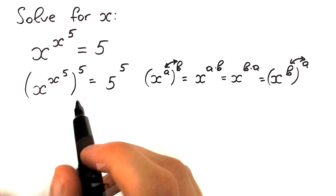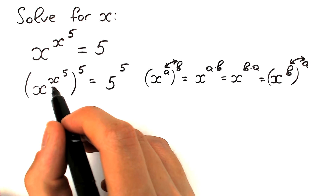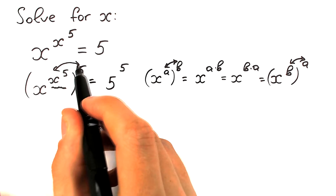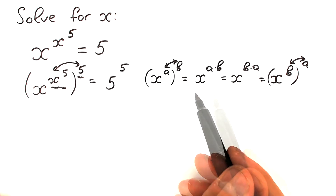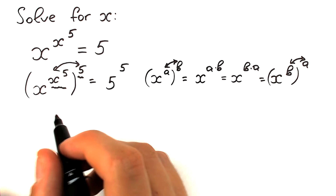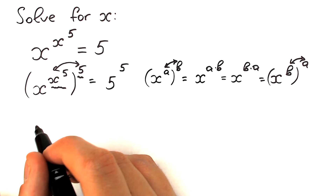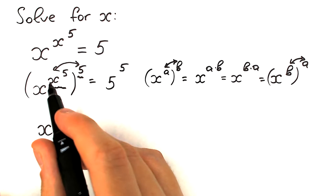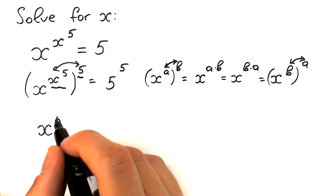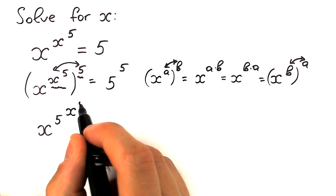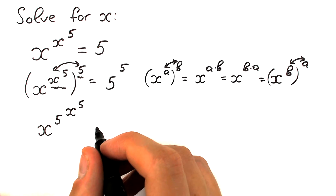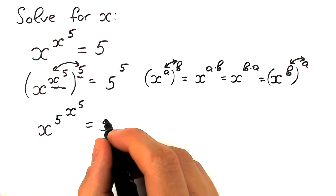So right now let's swap these powers. Right here we have x to the power 5 as a power, and right here a 5, so let's swap these powers. We can do this because of this rule — someone calls it the rule of interchange. So we have x to the power 5 going outside, giving us 5 and x to the power 5, equal to 5 to the power 5.